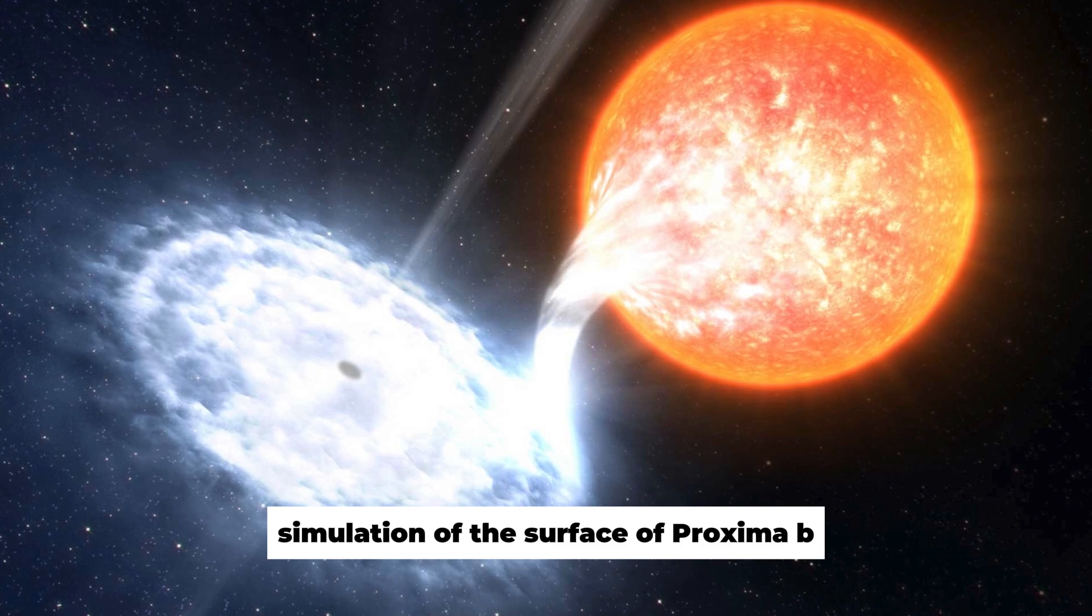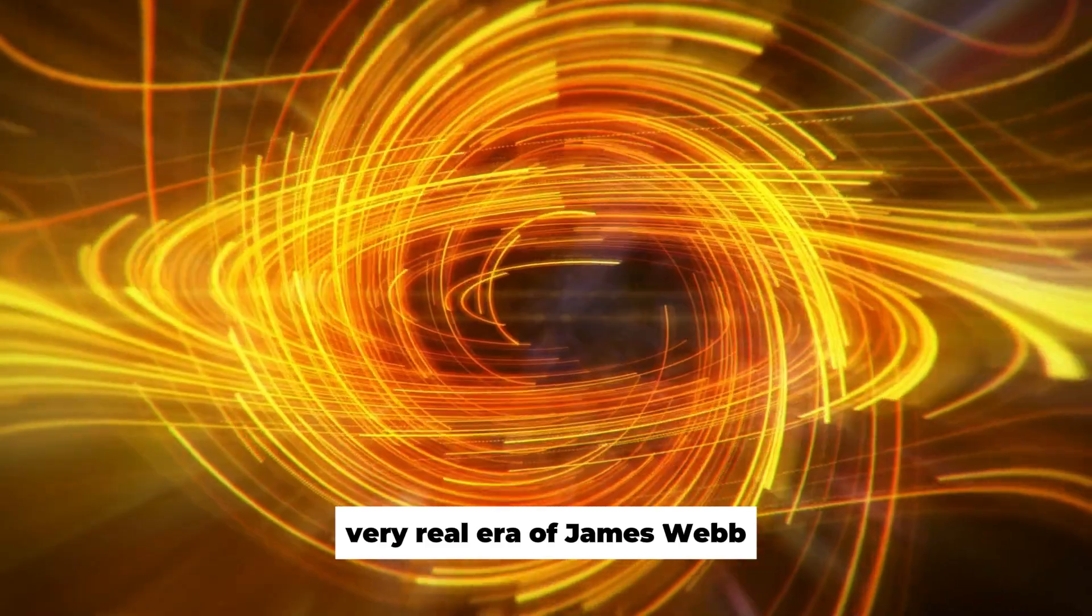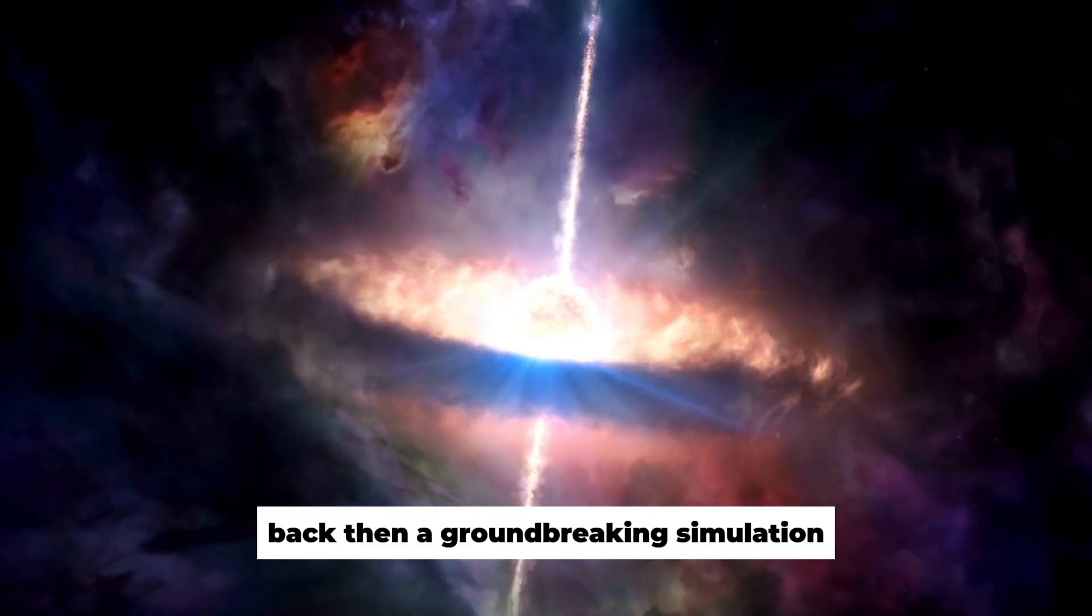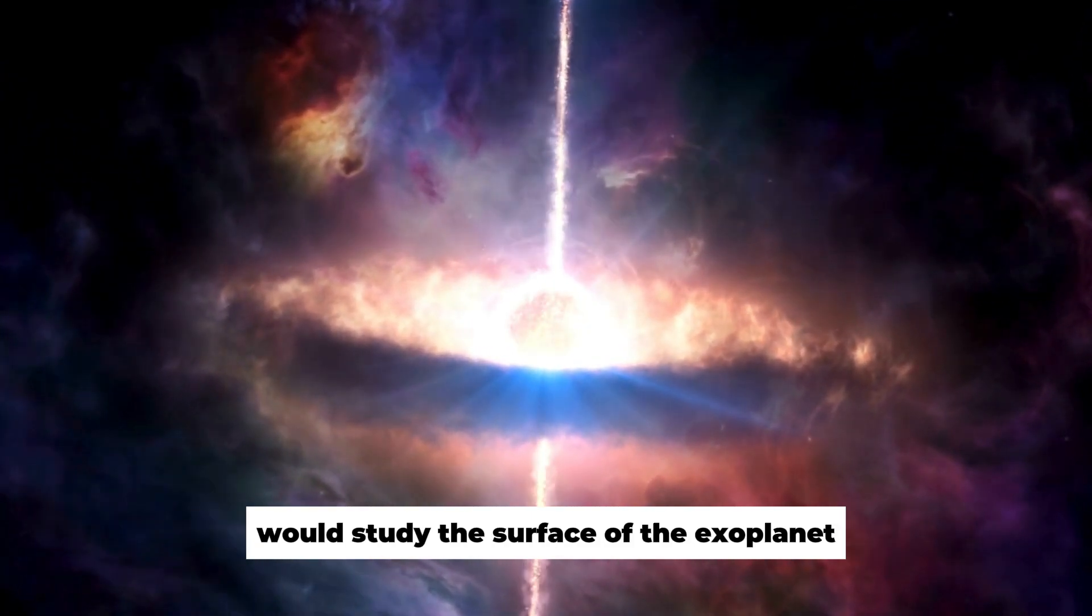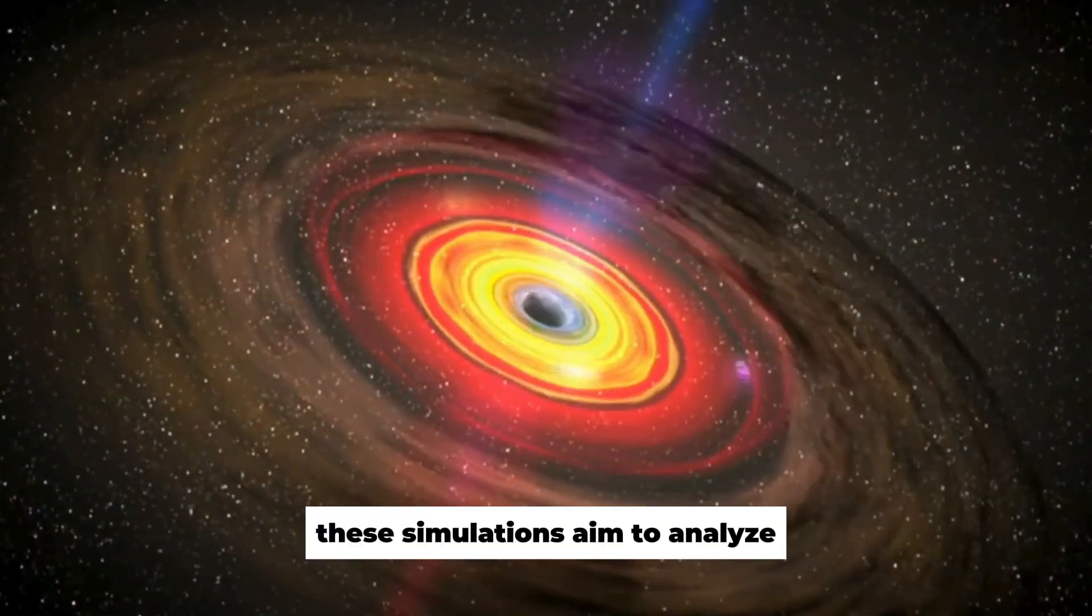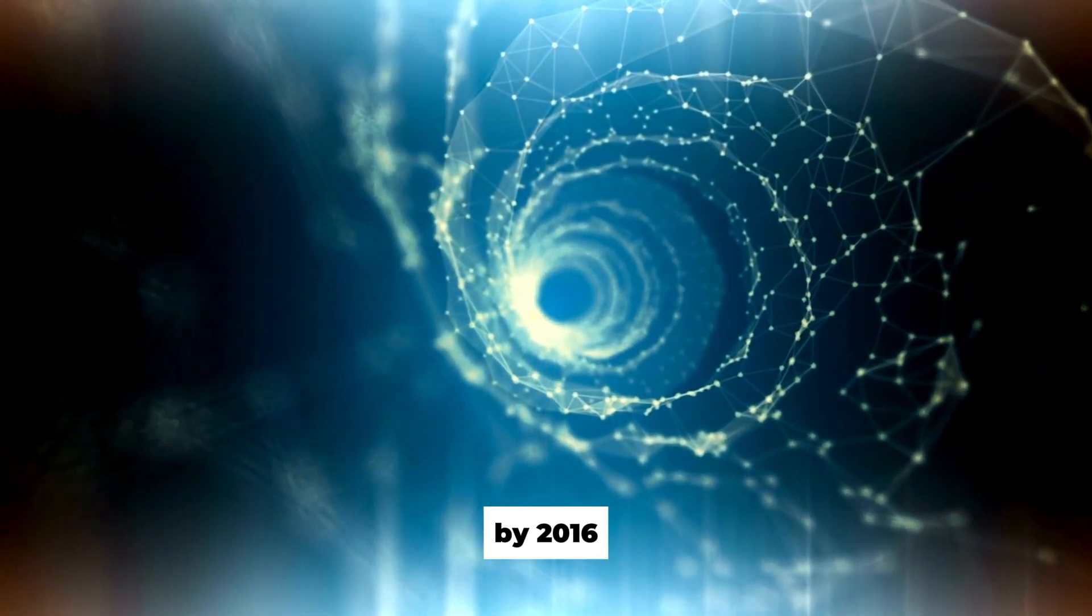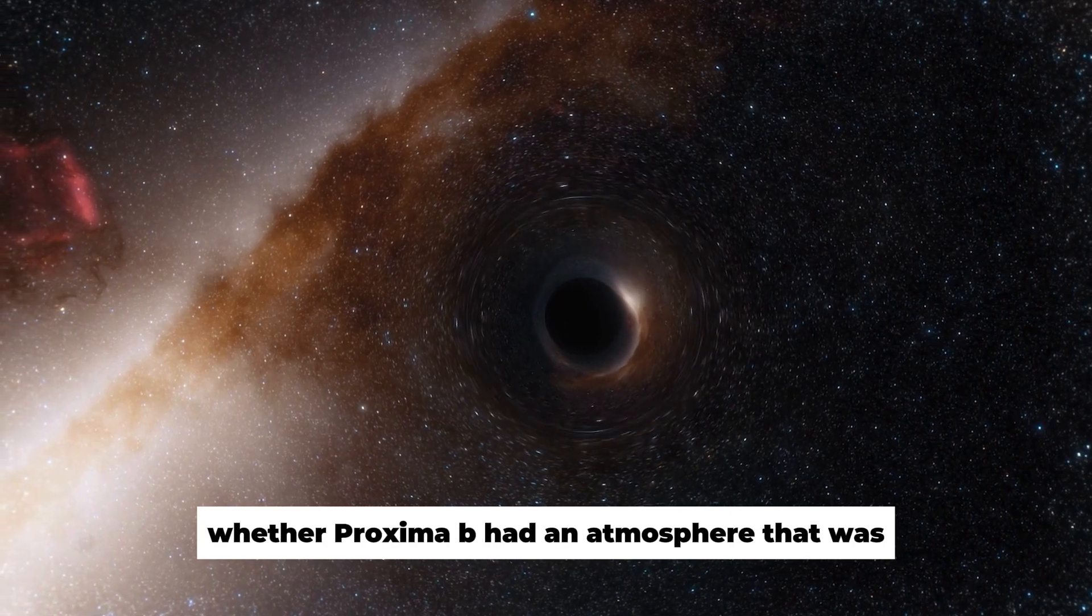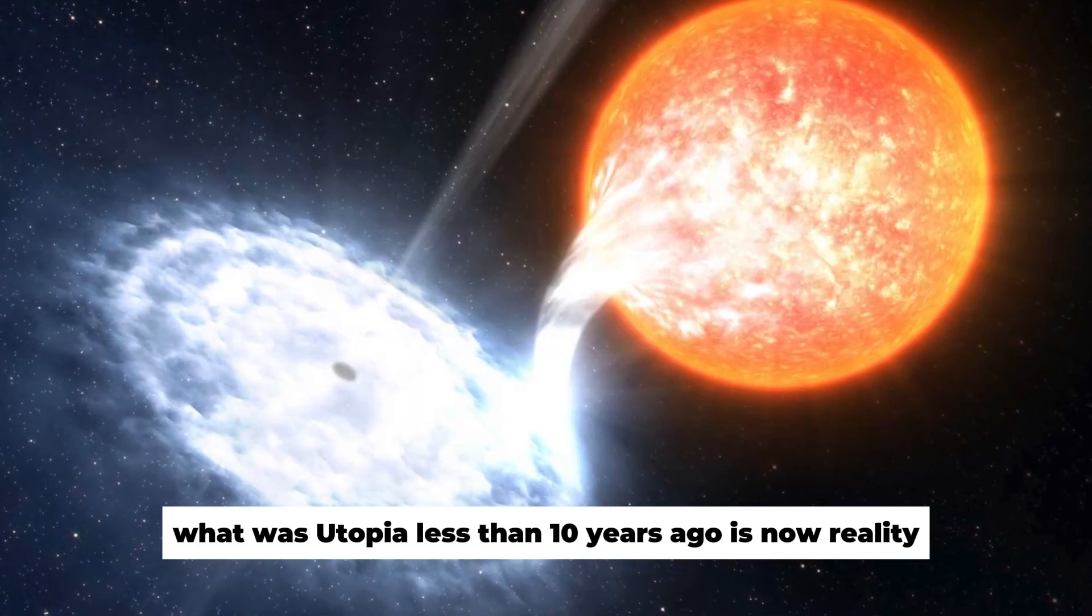Simulation of the surface of Proxima b. It was 2016 and a long way from the now very real era of James Webb when scientists dreamed of exploring alien worlds. Back then, a groundbreaking simulation predicted how the James Webb Space Telescope would study the surface of the exoplanet Proxima b in an unknown future. These simulations aim to analyze the planet's atmospheric and thermal properties. By 2016, researchers were already dreaming of finding out whether Proxima b had an atmosphere that was potentially hospitable to life. What was utopia less than 10 years ago is now reality.